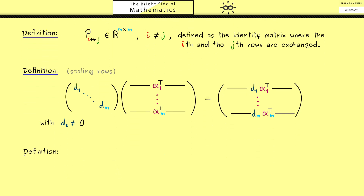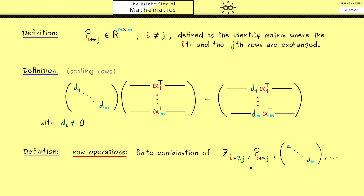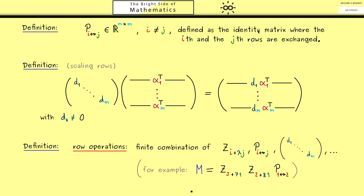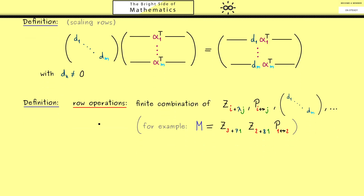With this we finally have all the operations covered by the term row operations. As a sloppy definition: row operations mean a finite combination of the matrices above — Z matrices, permutation matrices, and scaling matrices — all multiplied from the left. We know we can also reverse any such manipulation, so in summary we don't lose information.